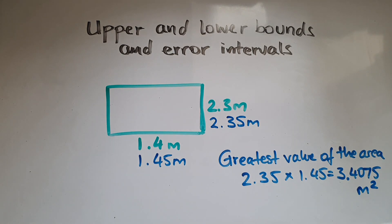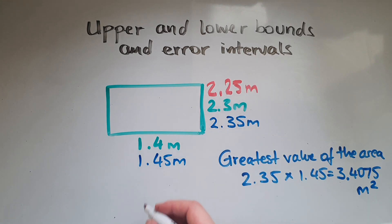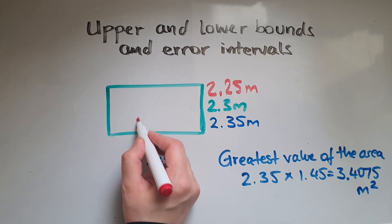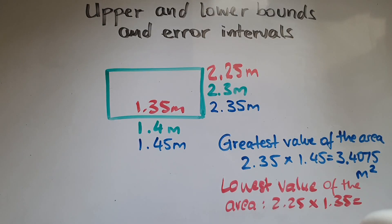So if we're asked to find the lowest value of the area, that means we're going to find the lower bounds. In this case we're going to do 2.25 meters and here we're going to do 1.35 meters. So the lowest value of the area will be 2.25 times 1.35, which is 3.0375 square meters.